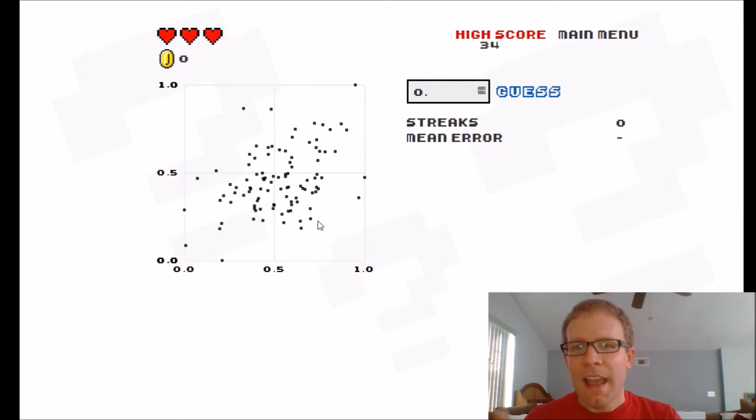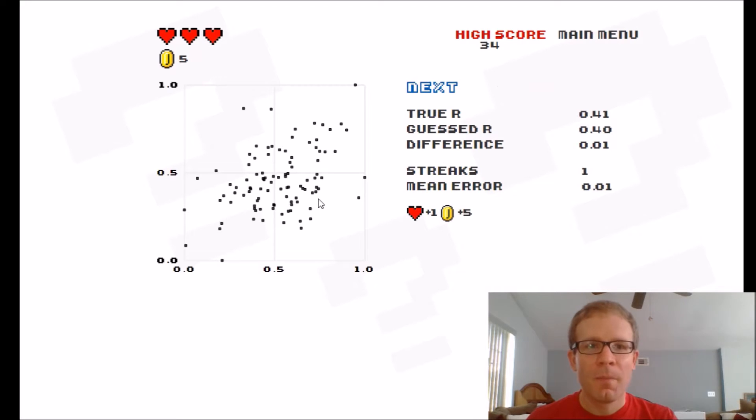So for example I see this. And I see that it's somewhat correlated. I'm not going to go above 0.5 on this one. But I've kind of learned that you don't want to underestimate. So I'm going to go with a 0.4. Oh all right. So the true r was a 0.41. I guessed a 0.4. The difference was a 0.01. I am on my first streak with one of them. And I got an extra life. Although you only have a maximum of three lives. Which is unfortunate. And I got five coins there.